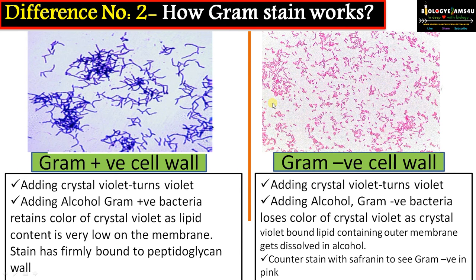So this is what we get at the end: gram positive bacteria will retain the color of crystal violet and remain violet, whereas gram negative bacteria, de-stained by alcohol treatment and counter stained with safranin, will appear pink. This is the principle of gram staining and is primarily due to the difference in cell wall components of gram positive and gram negative bacteria.